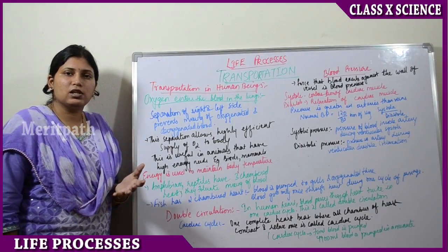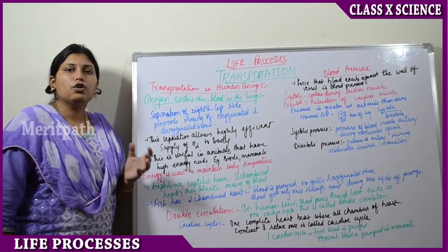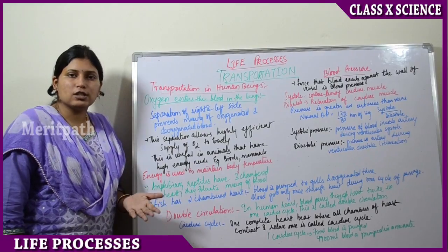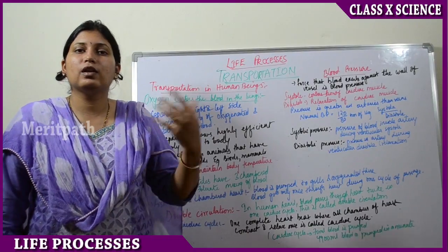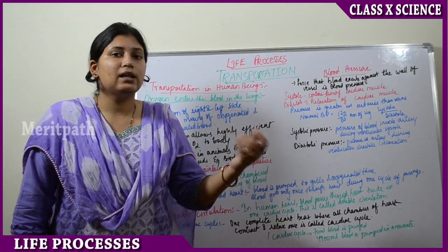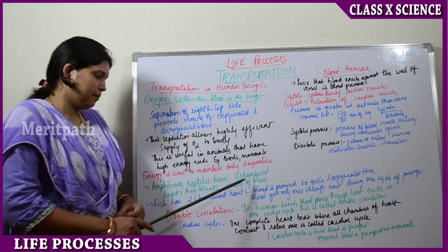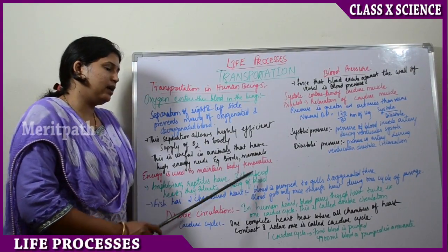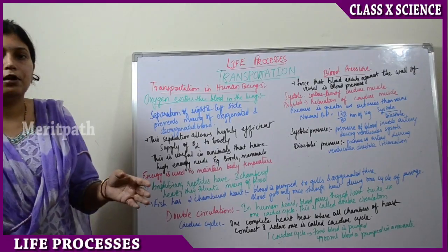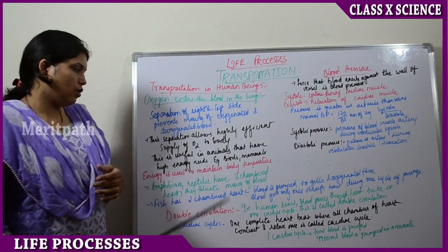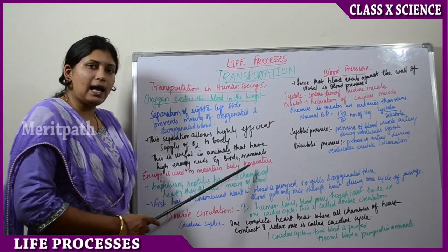This is useful in animals that have high energy needs, as more oxygen is required. If there is high physical activity, their tissues ask for more oxygen. This separation of chambers occurs in birds and mammals, where energy is used to maintain body temperature, so they need more oxygenated blood.